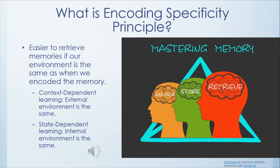This is what the encoding specificity principle is all about — when it is easier to retrieve memories if our environment is the same as when we encoded the memory.